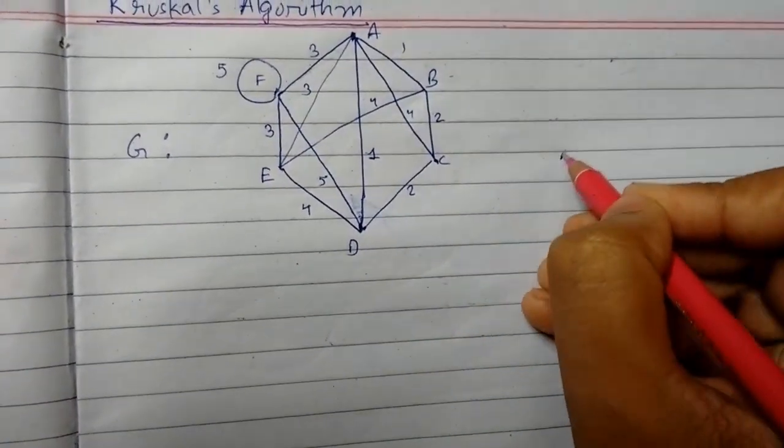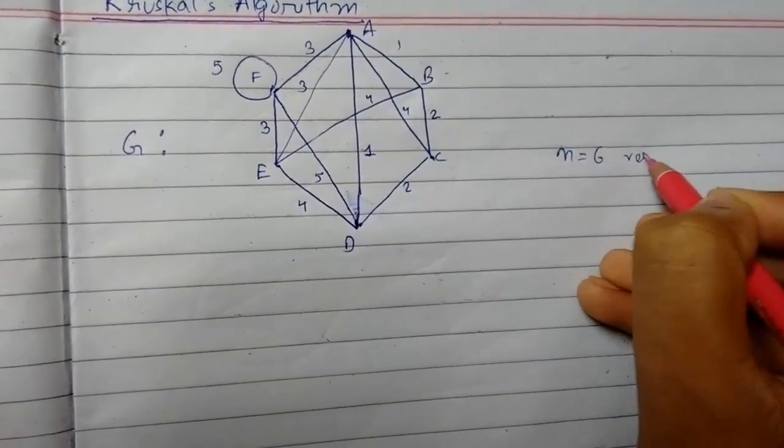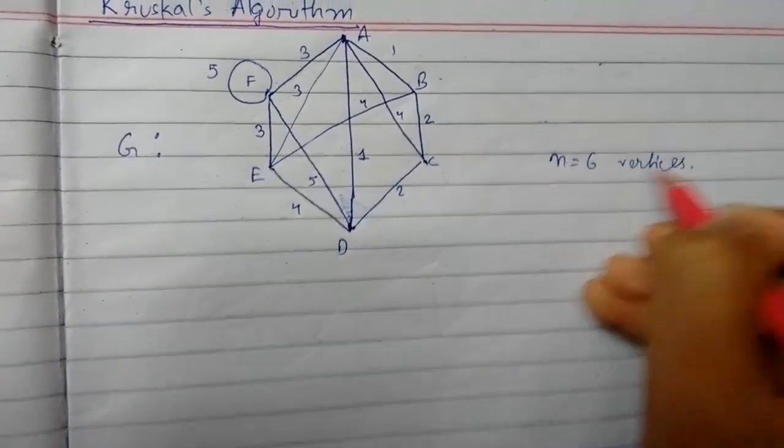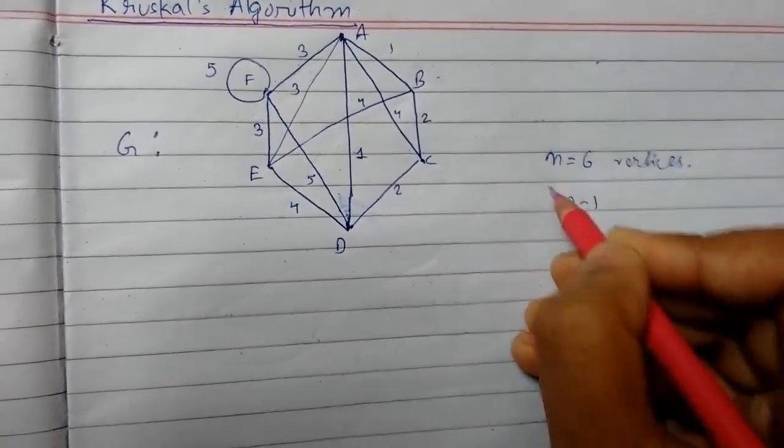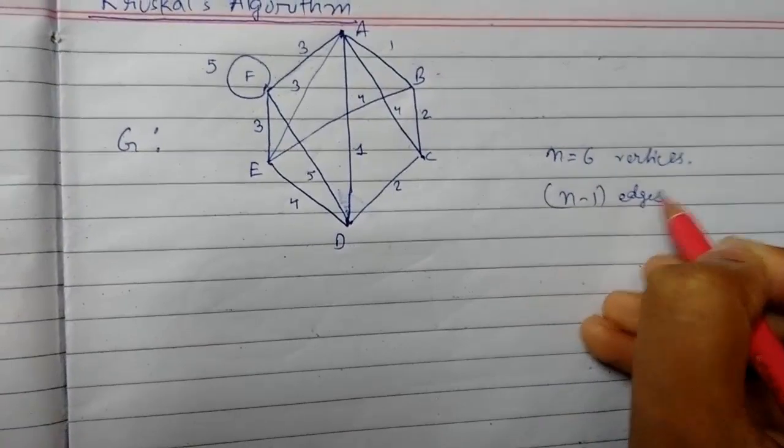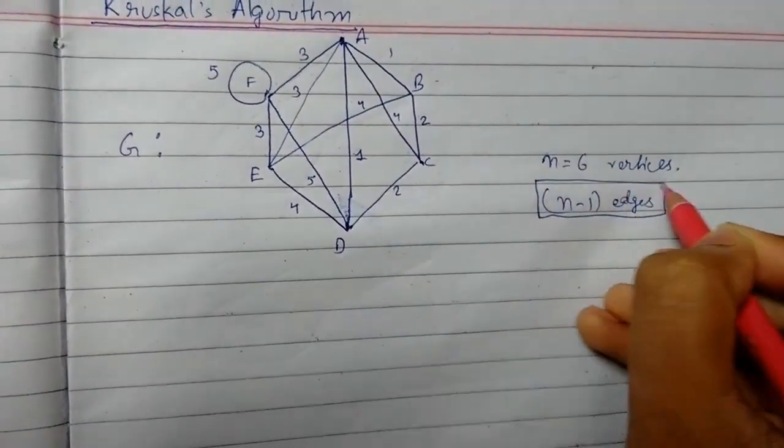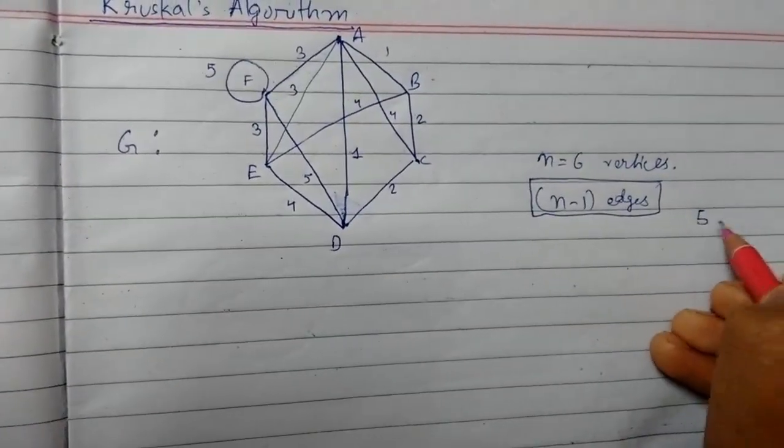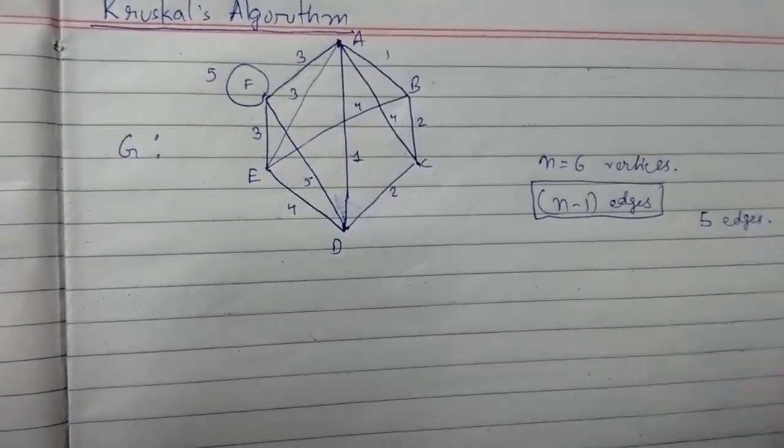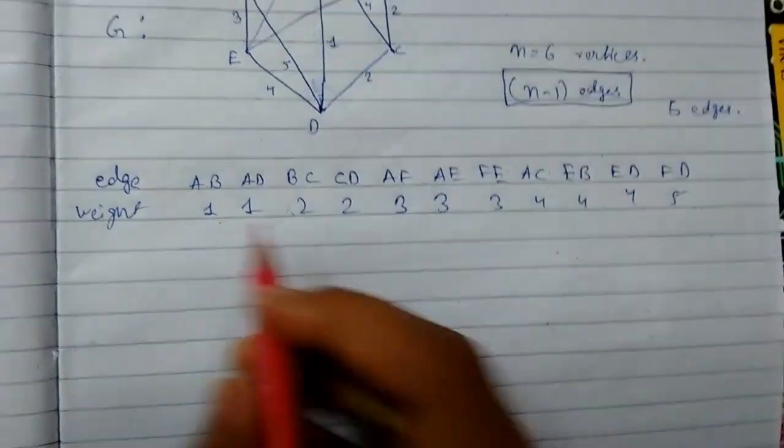Our shortest spanning tree must contain n-1 edges, so this is an important criteria. It must contain five edges here. Let me make a list. So I have made this table.